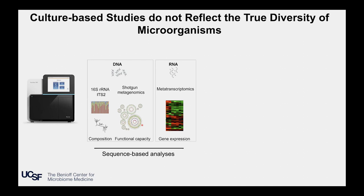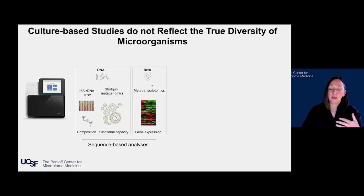However, shotgun metagenomics doesn't tell us what is functionally expressed from those genomes. To do that, we turn to RNA — the molecule that encodes the instructions for making proteins and small molecules. By sequencing RNA, we can get a sense of what genes are actually actively being expressed by a microbiome. That allows us to understand the changing responses of microbiomes at the transcriptional level to various conditions they are exposed to. All of these approaches are facilitated by next-generation sequencing-based technologies, which allow us to generate millions of sequences in single runs, producing very high-resolution profiles of microbiomes — their composition, their functional genes, and what they're transcribing.